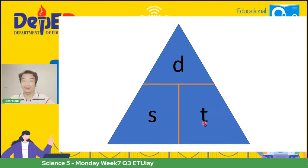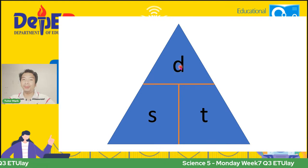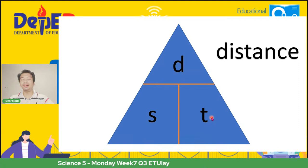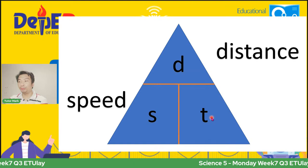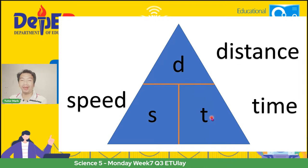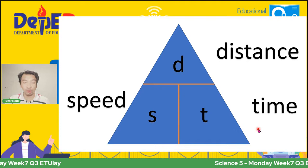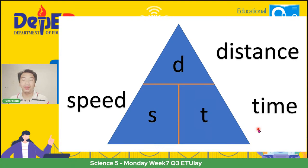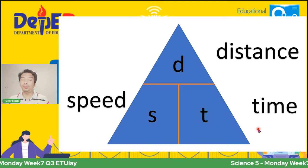Kapag distance ang ating hinahanap, ilagay lamang ito sa tuktok. Ang S bilang speed ay sa gawing kaliwa at ang T bilang time ay sa gawing kanan. Kung hinahanap natin ang D, tatakpan lang natin ito at kung anong matitira, yun ang kanyang formula — D is equals to S times T. Ganon din kapag hinahanap natin ang speed: D divided by time. Importanteng memorize natin ang itsura ng triangle na ito para madaling matukoy ang distance, speed, o time, dahil nandito na rin ang mismong formula.